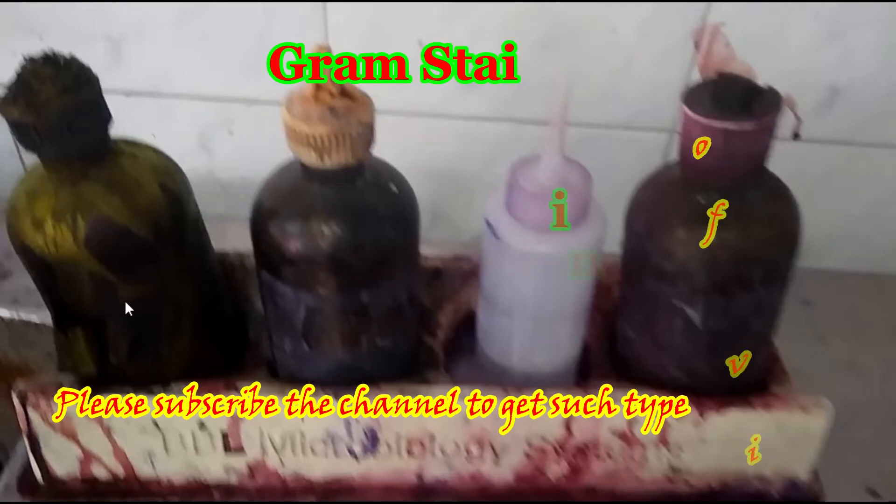Now let's start the staining procedure. Put this stain for one minute, then wash. Then put this also one minute, then wash and put this decolorizer only for few seconds or up to 10 seconds, because we are using acetone. If only 95 percent ethanol then we can use up to 30 seconds. After that, put this safranine for one minute and then finally wash. In this way our staining procedure will be completed.